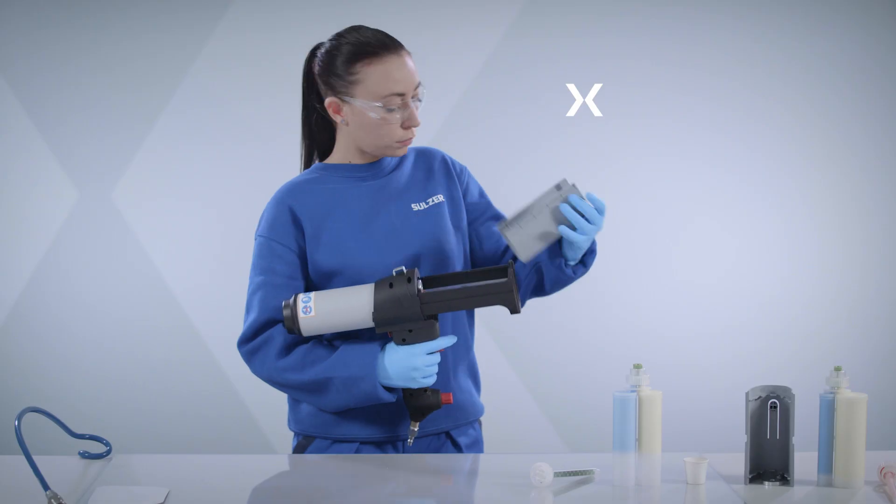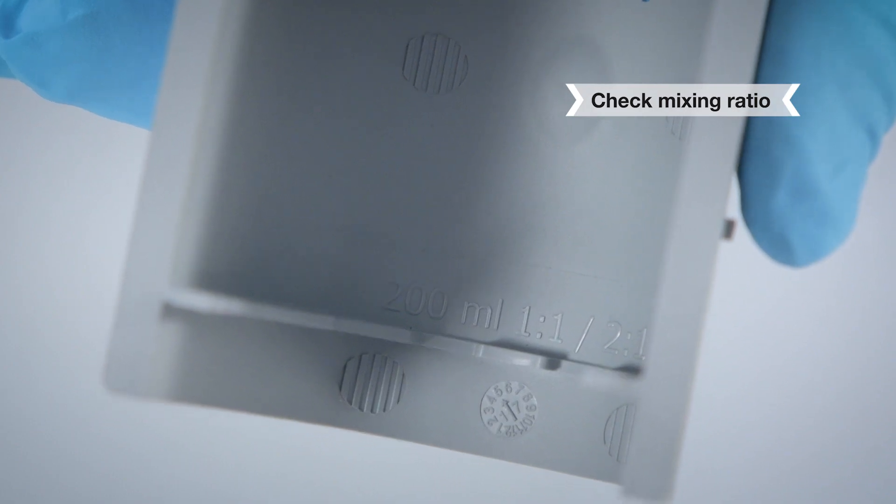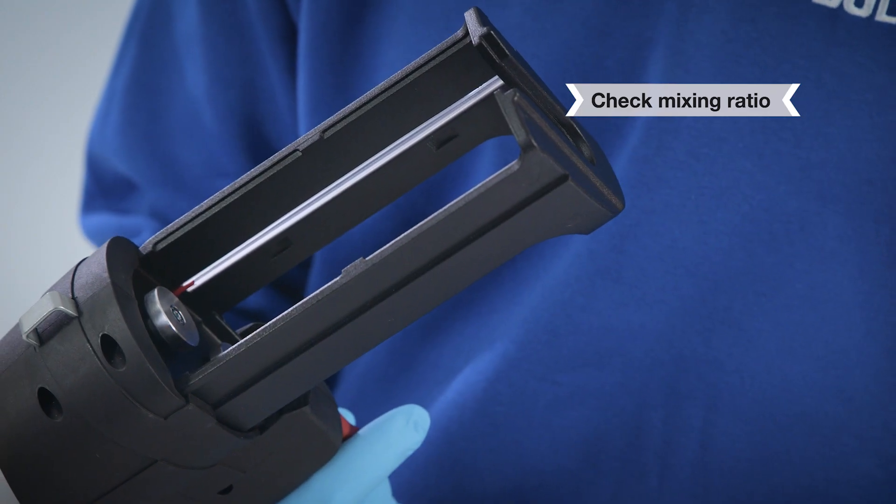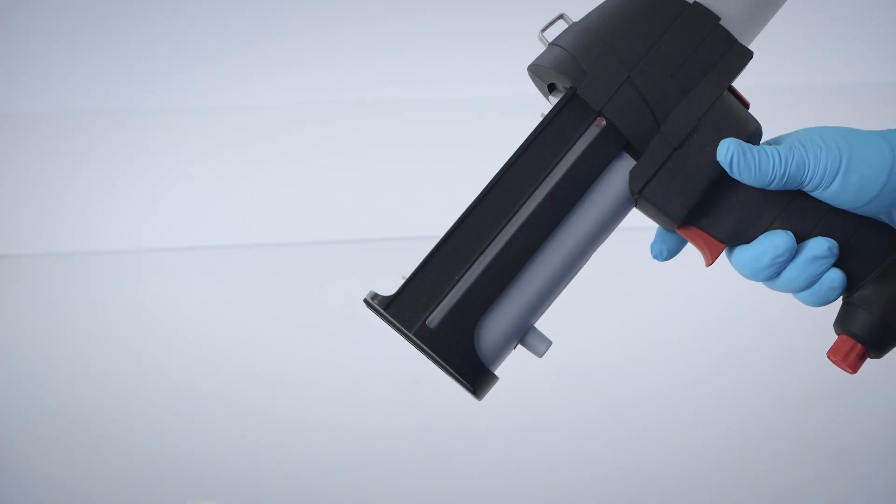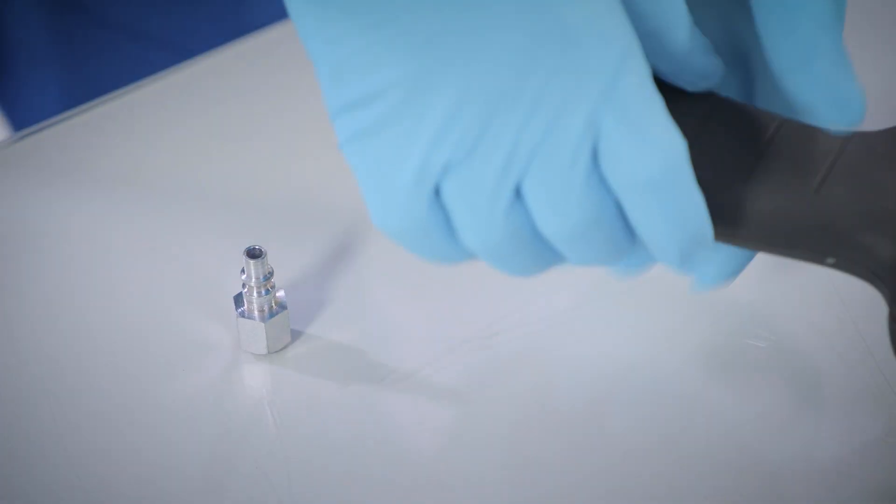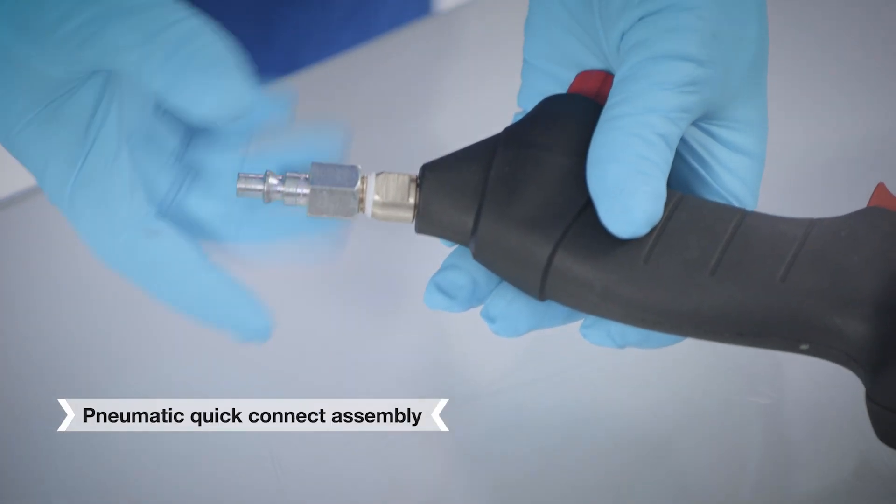Make sure that the cartridge tray ratio matches the desired cartridge size and that the cartridge eject button is at the front of the dispenser. Attach the quick connect adapter.